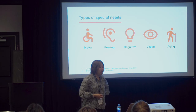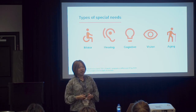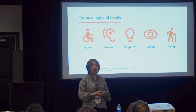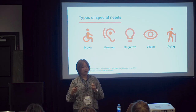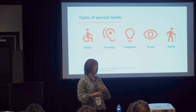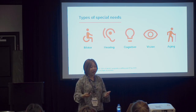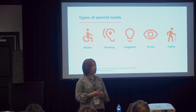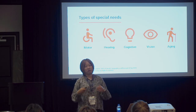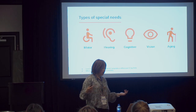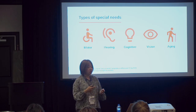I prefer the term 'special needs' over just 'accessibility,' because a lot of people simply prefer to do things in certain ways — like different keyboard shortcuts or desktop settings. In the design world, when doing user research, we ask how people prefer to be identified. Some say 'blind' is fine; others prefer 'low vision.' Be aware of the terminology you use. Disabilities include motor, hearing, cognitive, vision, and age-related challenges.